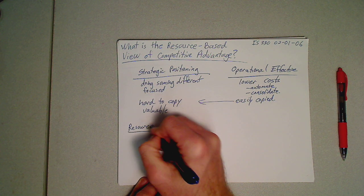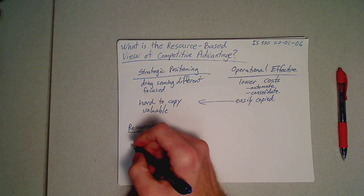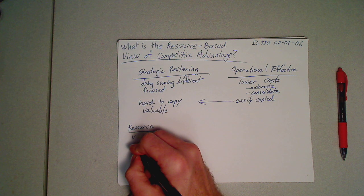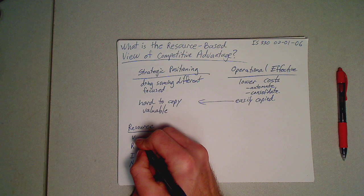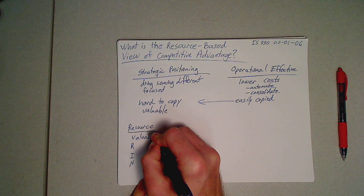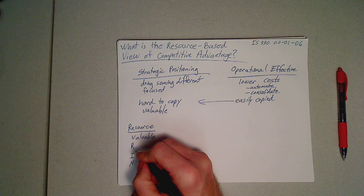that lead to sustainable competitive advantage must be what we call VRIN, V-R-I-N, which is they must be valuable, they must be rare,